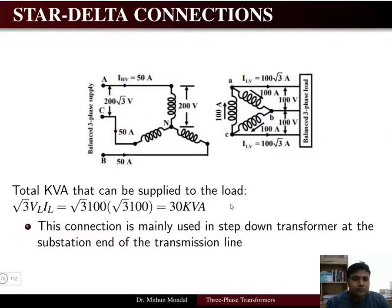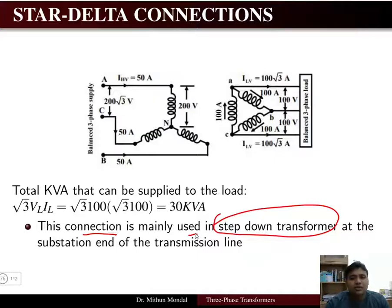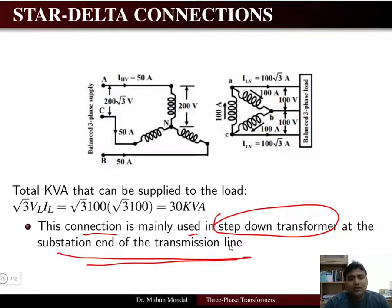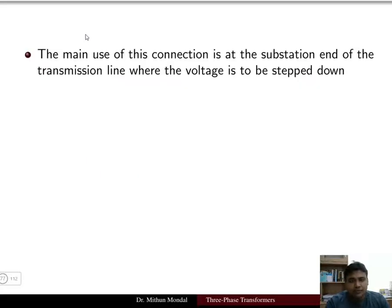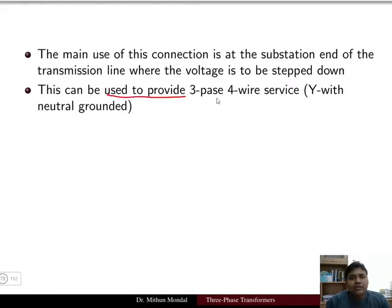The star-delta connection is mainly used for step-down transformers — where the secondary voltage must be less than the primary voltage — and is used at the substation end of a transmission line. It can also provide three-phase four-wire service by using a neutral grounded on the star primary side, supplying the fourth neutral wire.